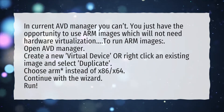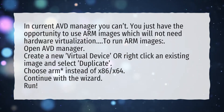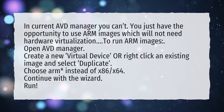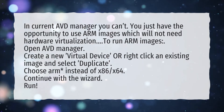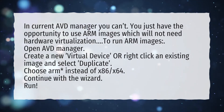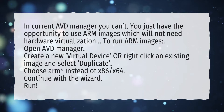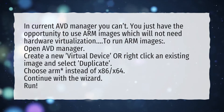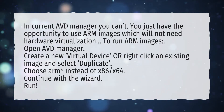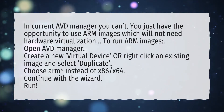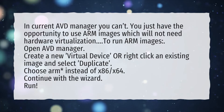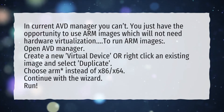Open AVD Manager. Create a new virtual device, or right-click an existing image and select Duplicate. Choose ARM instead of x86 or x64. Continue with the wizard and run.